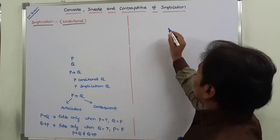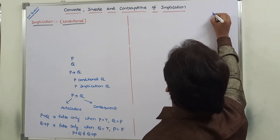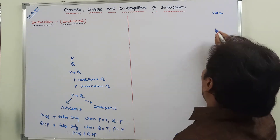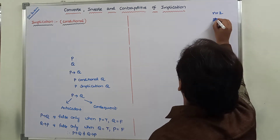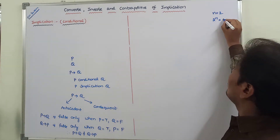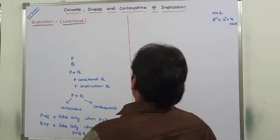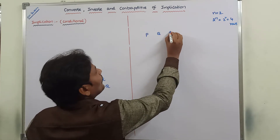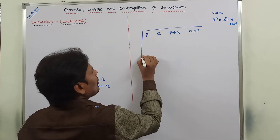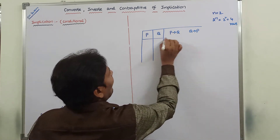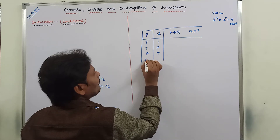Now we will draw the truth table for P conditional Q and Q conditional P. There are two statement variables, so N equals 2. The number of rows in the truth table is 2 power N, which is 2 power 2, equal to 4 rows. The four possible truth value combinations are: true-true, true-false, false-true, and false-false.